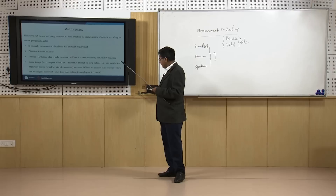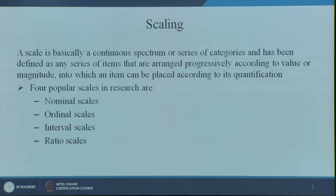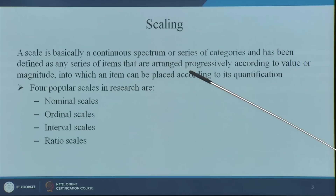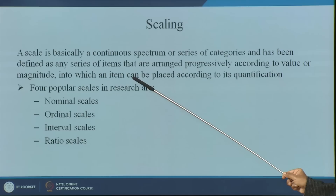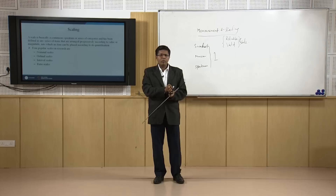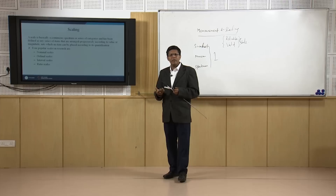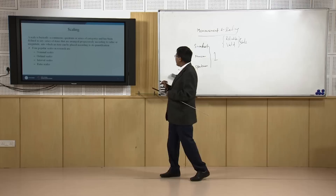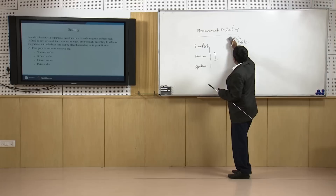A scale is basically a continuous spectrum, defined as any series of items that are arranged progressively according to value or magnitude. So this is something in a progression — like an arithmetic or geometric progression. Basically there are 4 types of scales possible in any data.